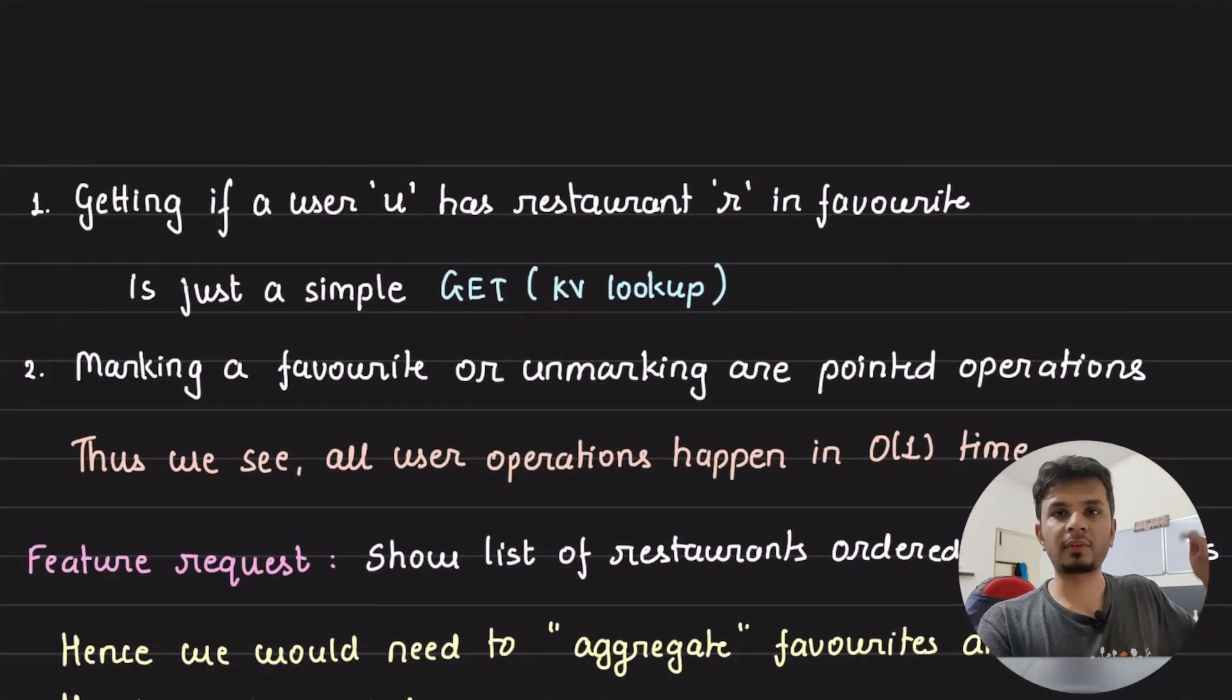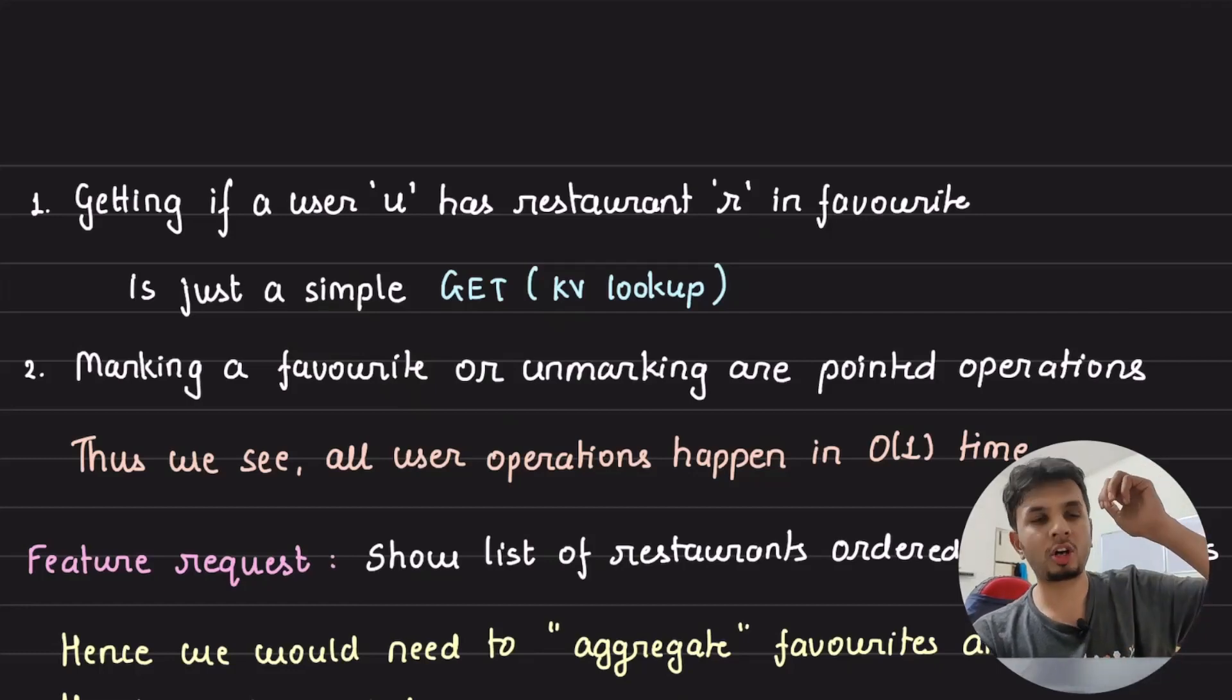Now to get this information, this schema that we just created works very well for our pointed queries. For example, if I want to get if user U has restaurant R in its favorite or not, it's just a simple get. It's an extremely simple key-value lookup. Given a key, which would be R_user (restaurant_user), if I check for that, I'll get if a user has marked this restaurant as its favorite or not. Extremely simple, order one. Marking a favorite restaurant or unmarking are just pointed operations, so it's just pointed get or pointed create or basically pointed delete. All these operations are order one.